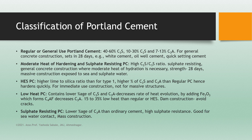Type 4 is low heat Portland cement, which contains a lower percentage of C3S and C3A, decreasing the rate of heat evolution in use. By adding Fe₂O₃, which forms C4AF, the percentage of C3A decreases. It evolves 15 to 35% less heat than regular or high early strength Portland cement. This cement is used for dam construction where we want to avoid cracks.